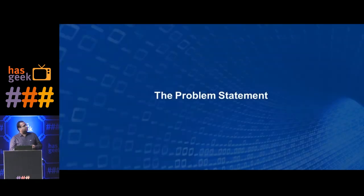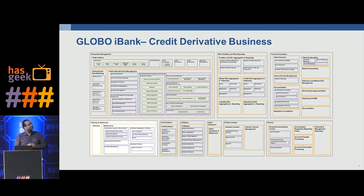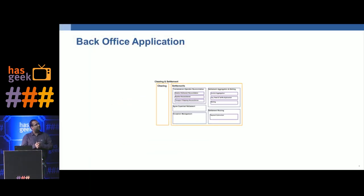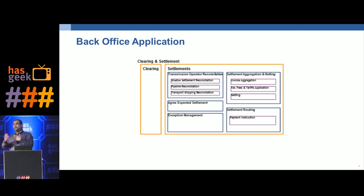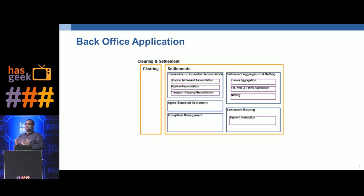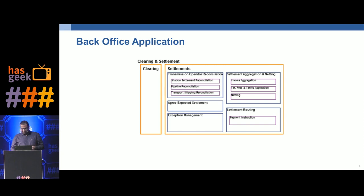Before I get started, let me introduce the problem statement. Let's call the bank 'global iBank' because I can't use the client's name. We were working for the credit derivative business for this bank, and a small portion of that was the clearing and settlement function. Settlement is the process that occurs after you execute a trade on the market — cash flows are generated. These could be one-time or periodic, across multiple currencies and different countries, and settlement is where those cash flows are actually transacted with your bank.